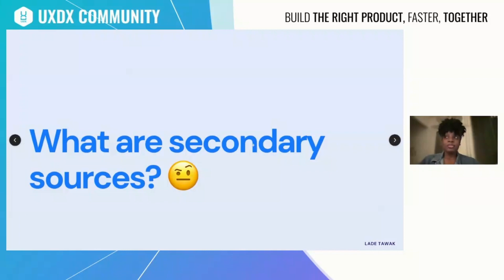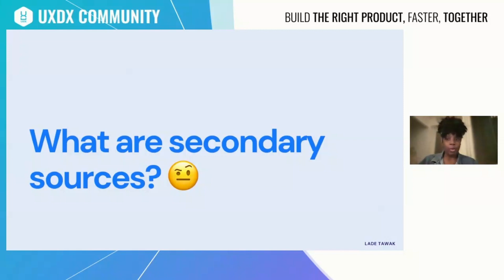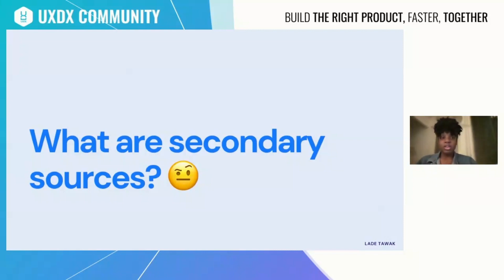So secondary sources in research — when you do research, there's primary research and secondary research. Primary research is when you go directly to the source, the people or thing you want to find out more about, and you do that research yourself: you do the interviews yourself, you do the surveys yourself, all of that. Secondary sources is the opposite — you're relying on secondhand information. It is research culled from other people's research and fact-based findings.